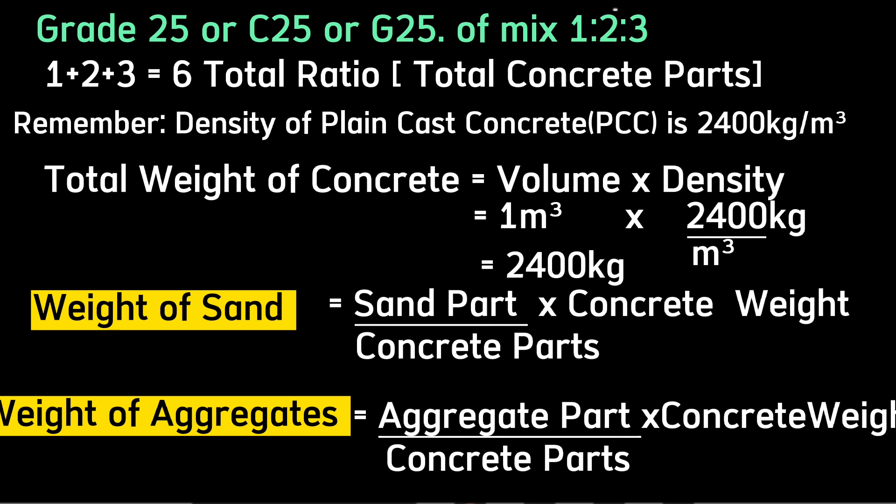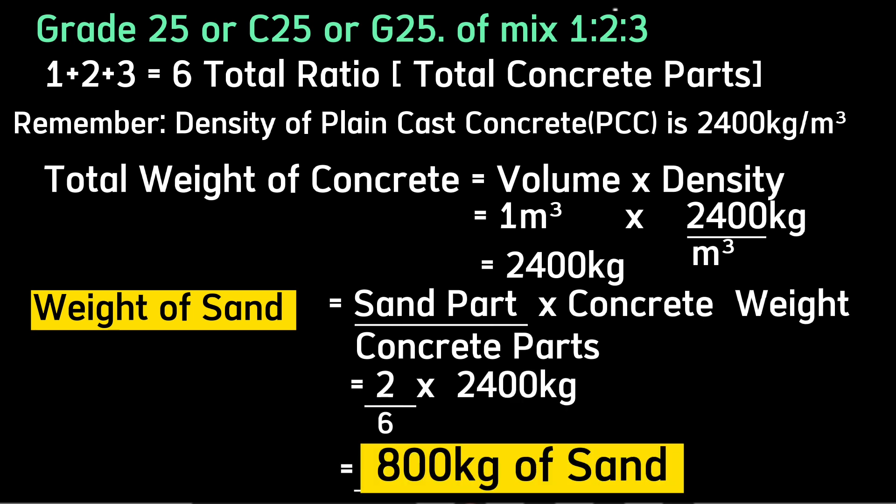The part of sand is 2 and the total concrete parts is 6. We get concrete weight using the formula: weight = density × volume. The density of plain cast concrete is 2400 kilograms per cubic meter. So the total weight of concrete for one cubic meter will be 2400 kilograms.